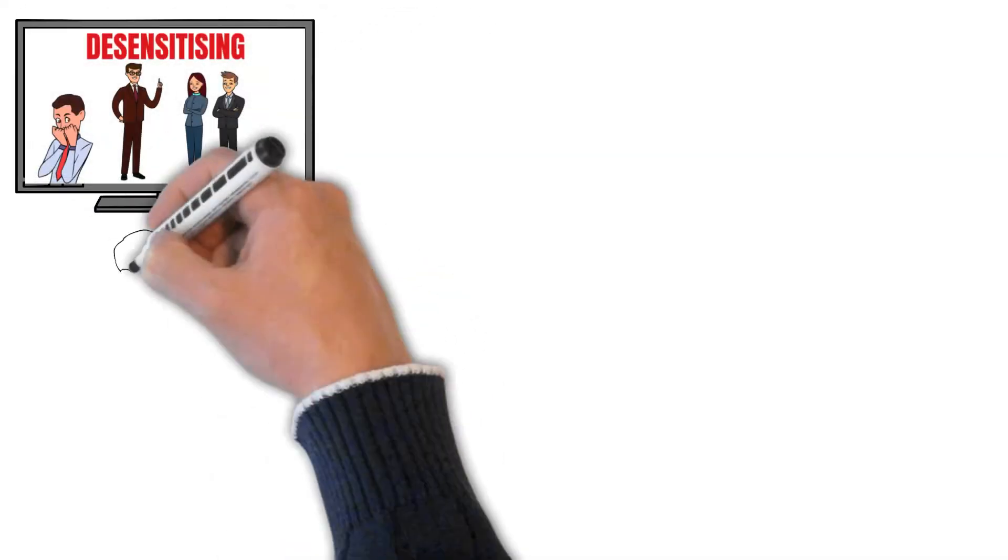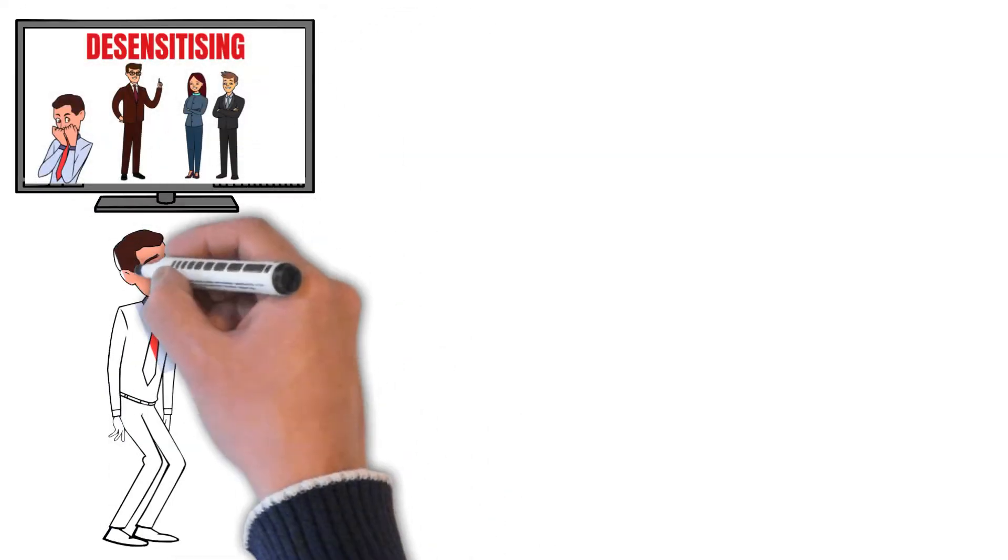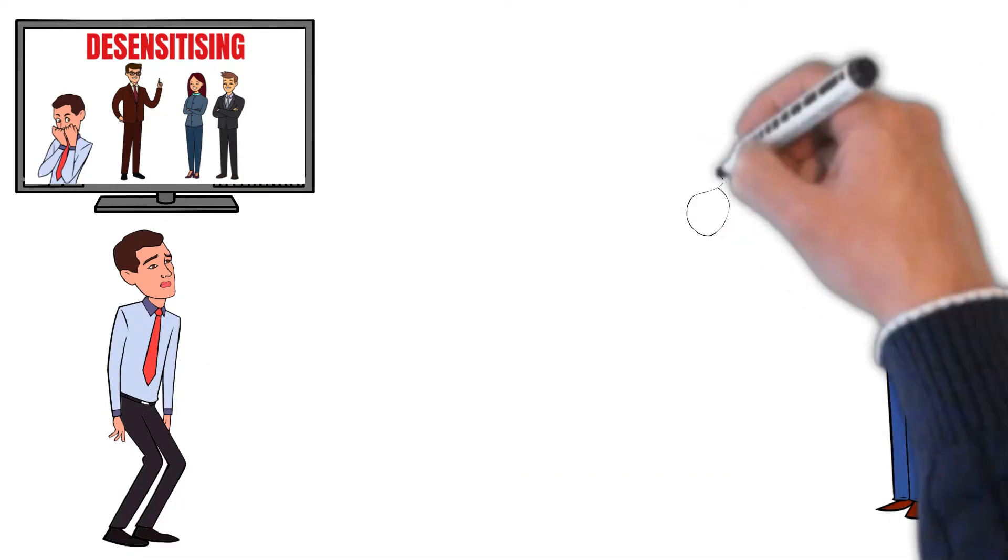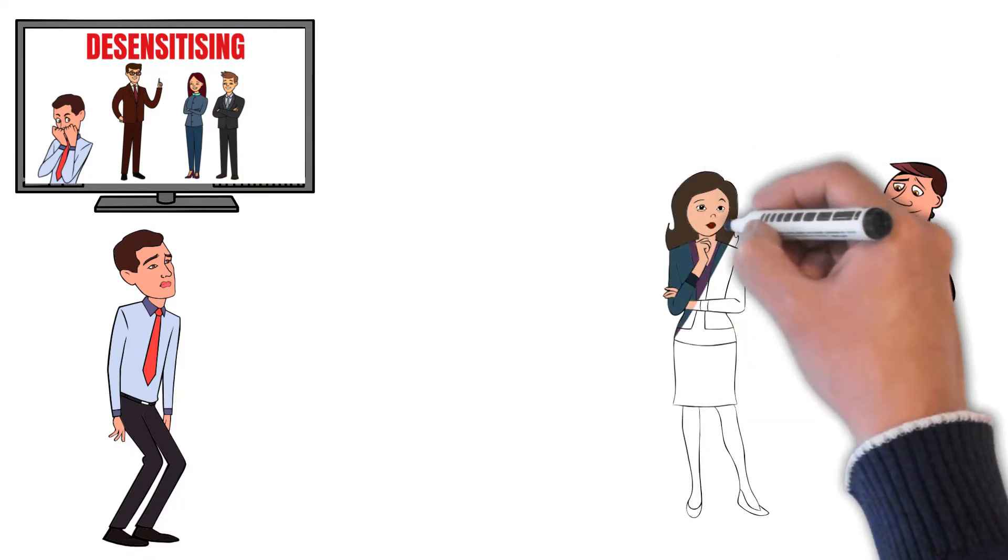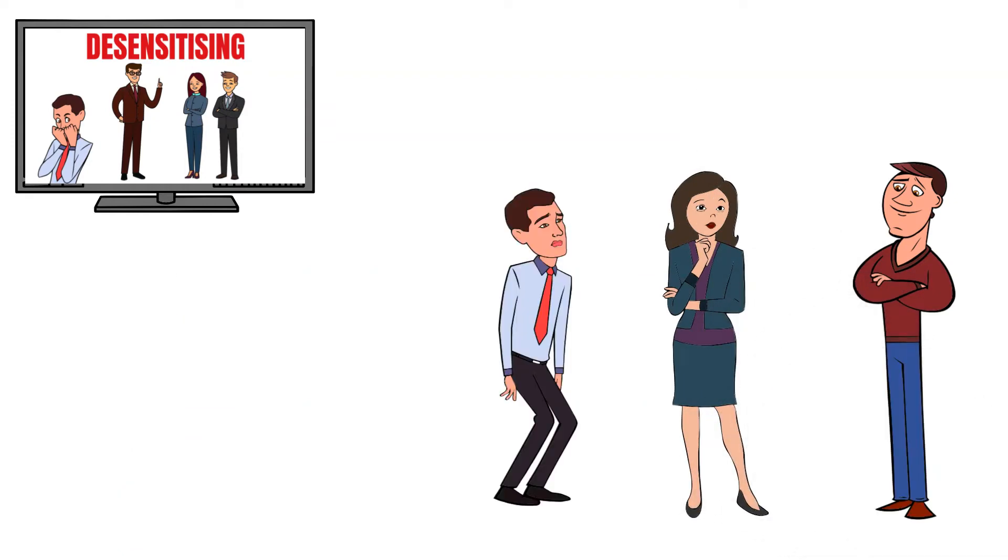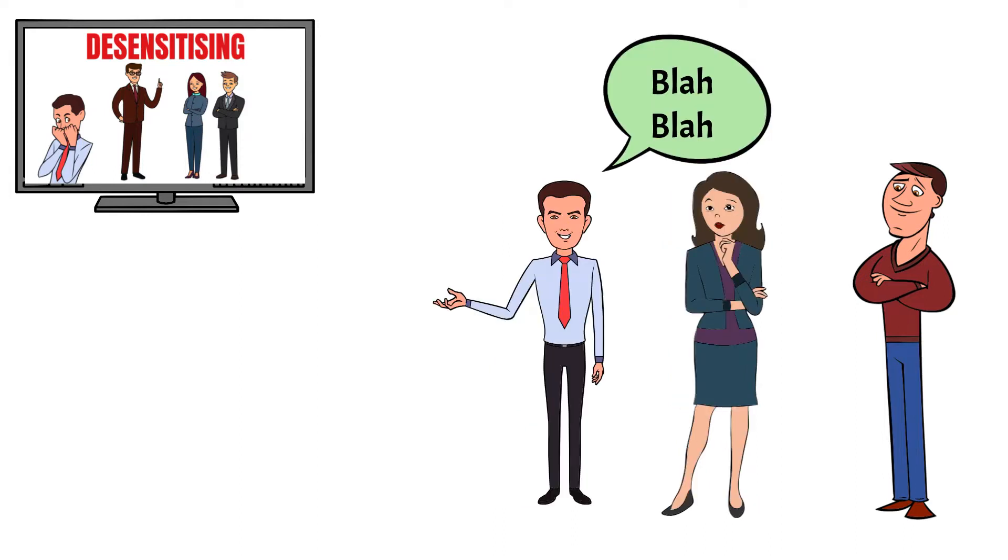In video 5 we looked at gradually exposing yourself to anxiety-provoking situations so that you desensitize. You can do the same with conversations. At first just join small groups and mainly listen. No one expects someone who is probably known to be a bit shy to suddenly lead the group conversation. But you can gradually increase your contribution over the months.